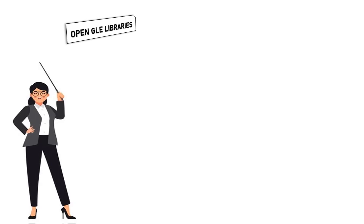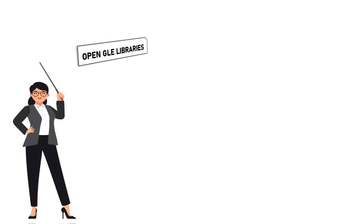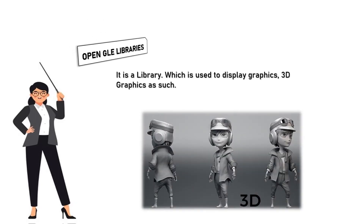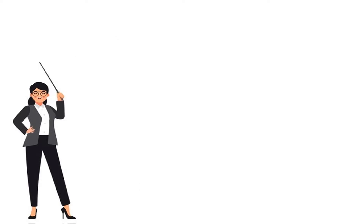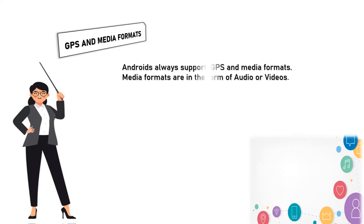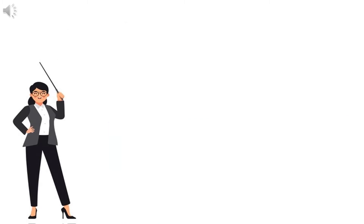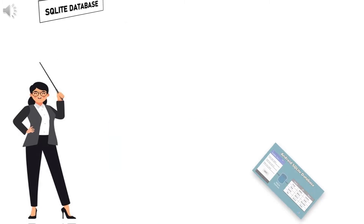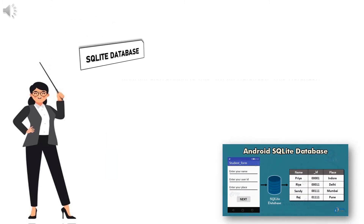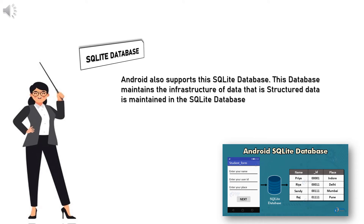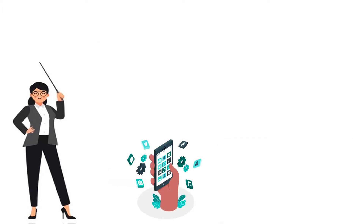4. OpenGL Libraries — It is a library which is used to display graphics and 3D graphics. 5. GPS and Media Formats — Android always supports GPS and media formats; media formats are in the form of audio or videos. 6. SQLite Database — Android also supports SQLite database. This database maintains structured data within the SQLite database.